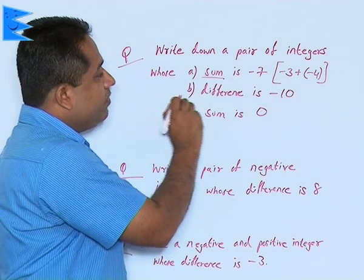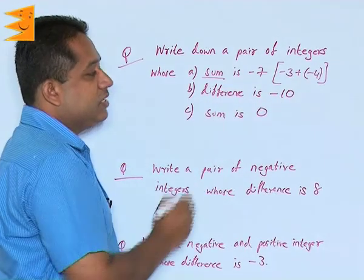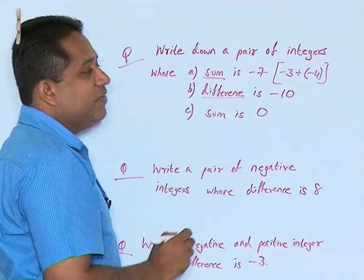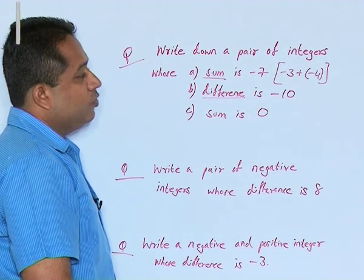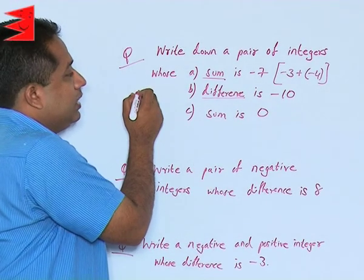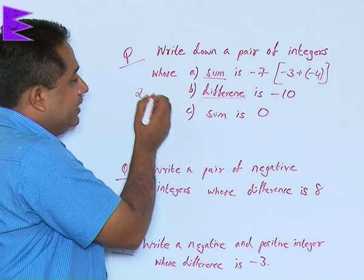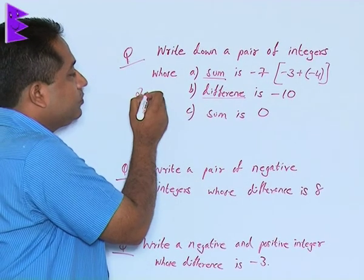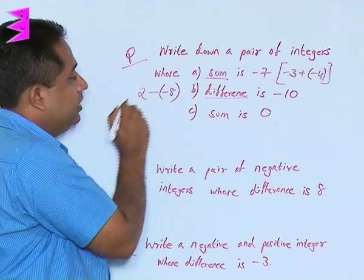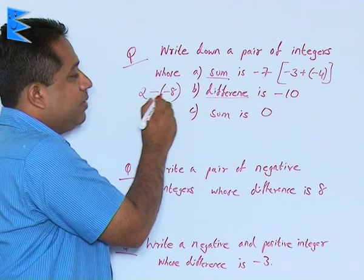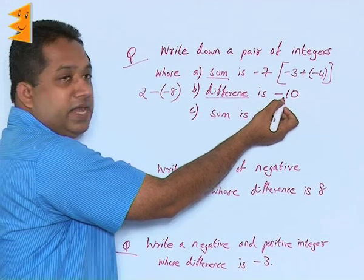For the second part, we have to show a pair of integers where the difference is minus 10. Difference means when we subtract the two numbers, we should get minus 10. For example, let the first number be 2 and we subtract minus 8 from it. Minus and minus becomes plus, so 2 plus 8 gives 10 — but the difference here is plus 10, not minus 10.